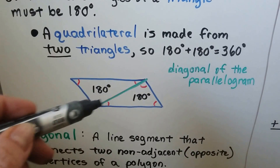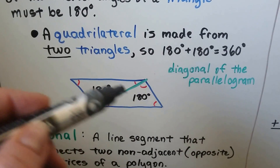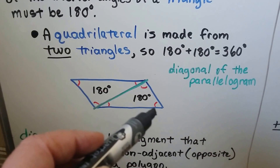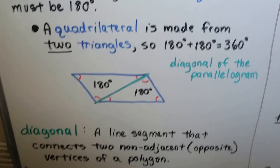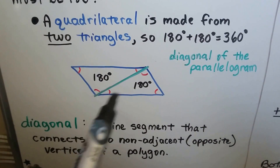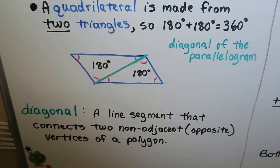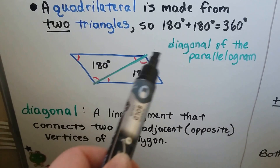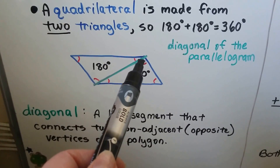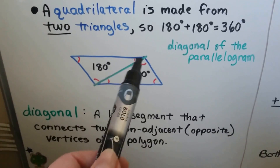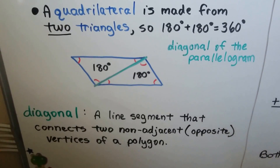This is a diagonal of this parallelogram. It splits it into two triangles. There's actually another diagonal going this way, but I just drew this one to show the two triangles. If I drew it going the other way, it would make a triangle here and a triangle up there. It's a line segment that connects two non-adjacent — that means opposite — vertices of a polygon. So this diagonal connects this vertex to this vertex.